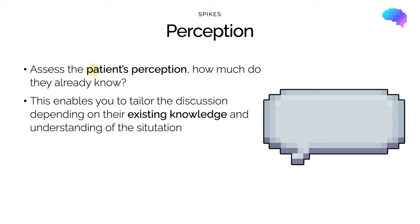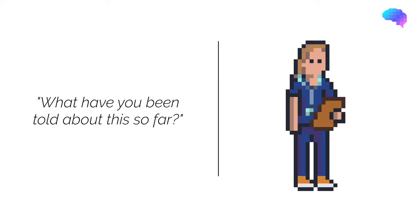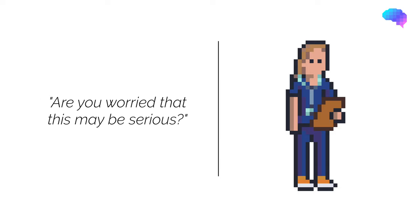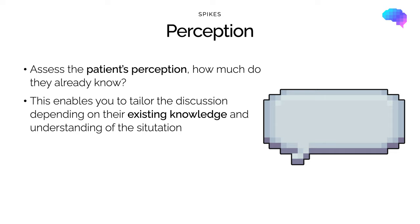The next step in SPIKES is establishing the patient's perception. This is really important to do, especially before you deliver the bad news. You need to find out what the patient already knows or is expecting. The patient may or may not be aware of the possible diagnoses or that bad news may be coming. The patient's perception enables you to tailor the discussion depending on their existing knowledge. Some questions you could ask include: 'What have you been told about this so far?' or 'Are you worried that this may be serious?' You may find there is a mismatch between the patient's understanding of the situation and the medical reality, and establishing this early will help when you go on to deliver the bad news.